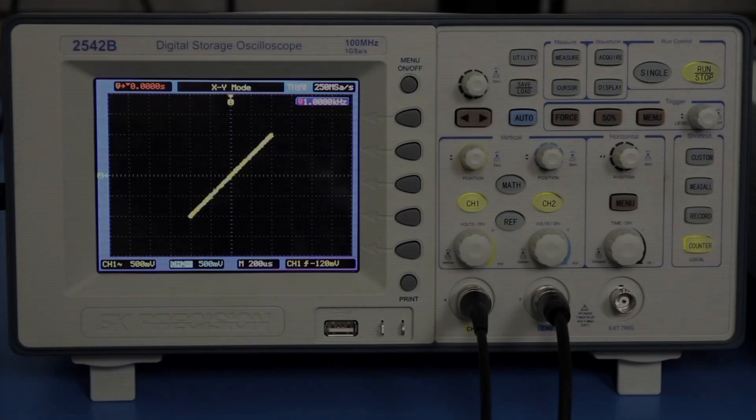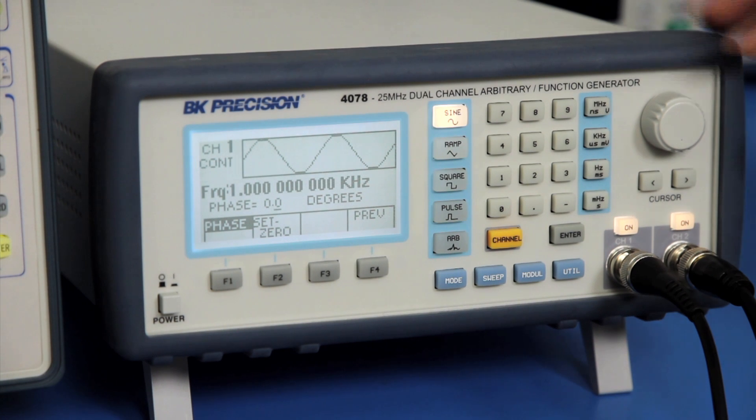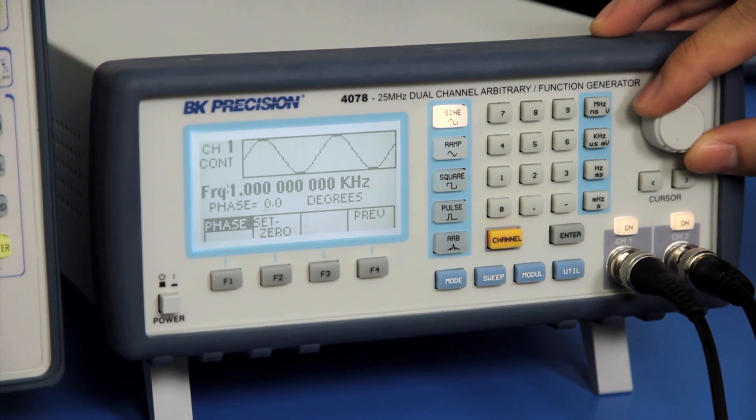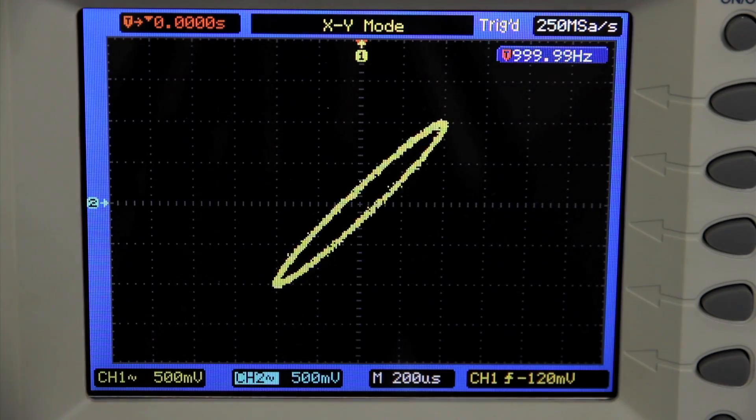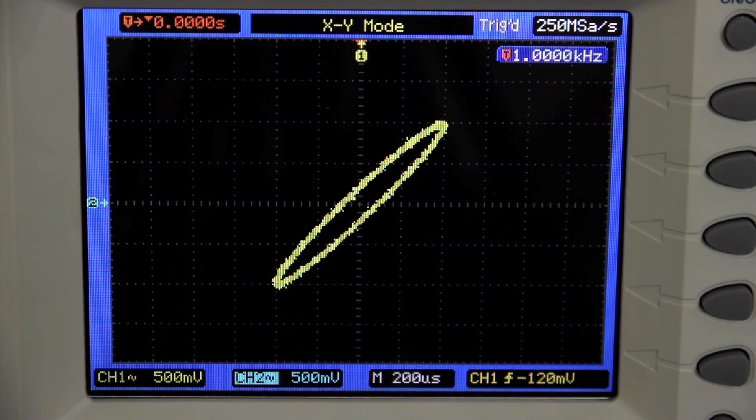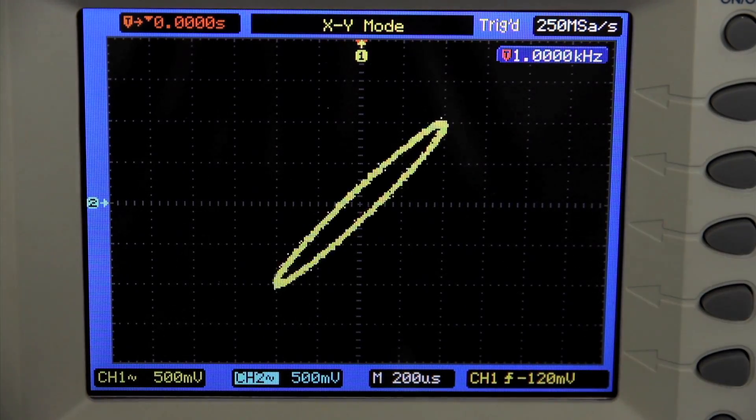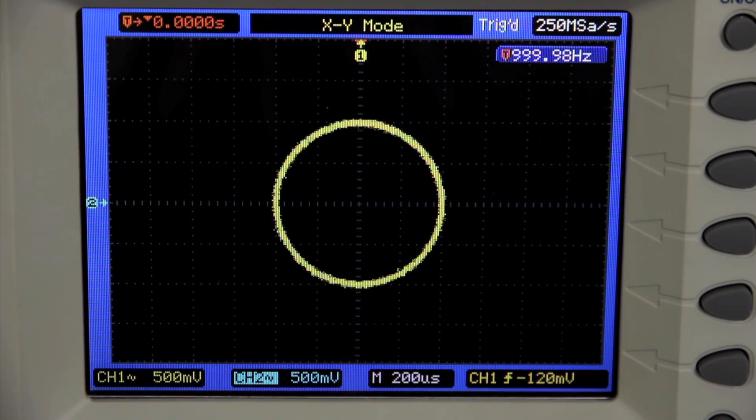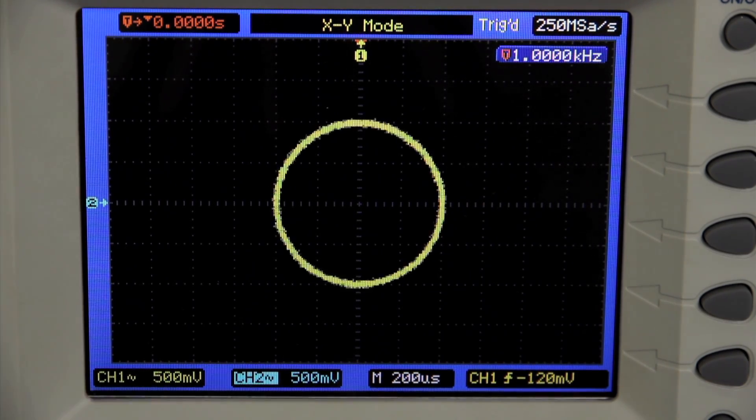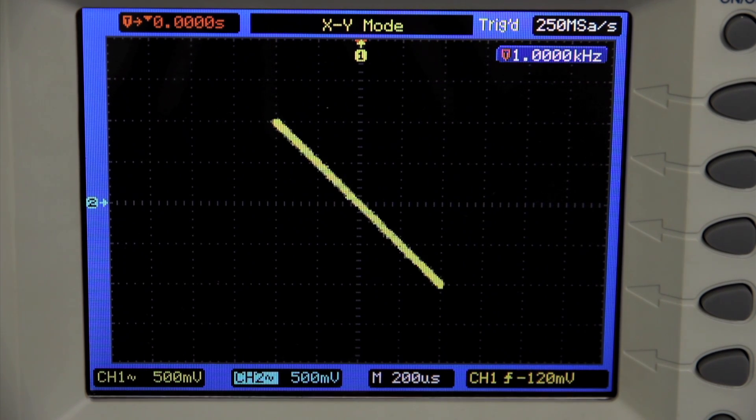Now I'm going to slowly adjust the phase on the 4078 for one of the channels and notice the change in the pattern. You will see an elliptical pattern which means the two waveforms are out of phase. At 90 degree phase shift, you will see a circle pattern on the scope. If I continue to increase the phase shift degree, you will eventually see a backslash line at 180 degree phase shift.